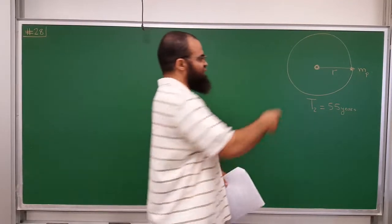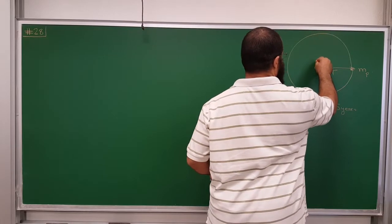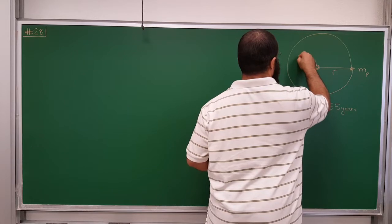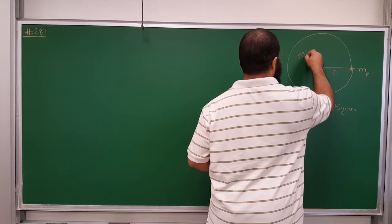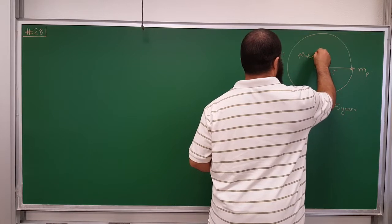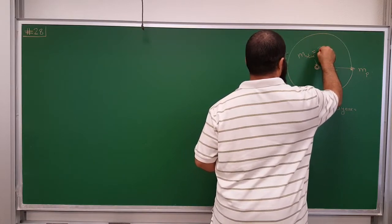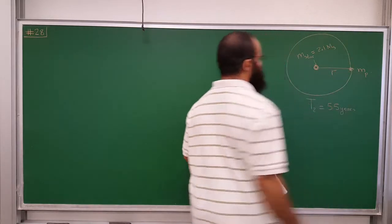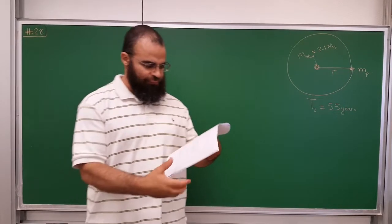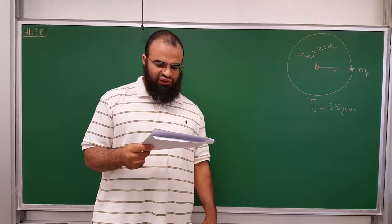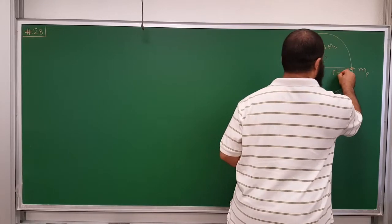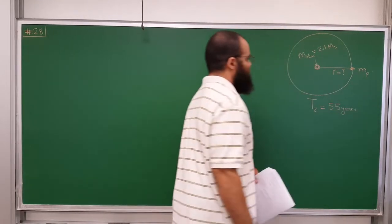The mass of this star is 2.1 times the mass of the sun — so it's heavier. And the question is: what's the radius of the planet's orbit? R is how much?